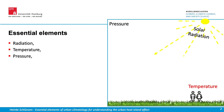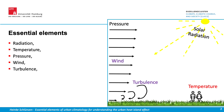Before we look into the heat island, we briefly want to repeat how local climate is created. The solar radiation causes temperature gradients on the Earth's surfaces. These result in pressure gradients. The pressure gradients initiate wind.